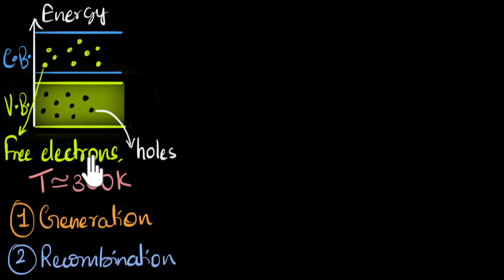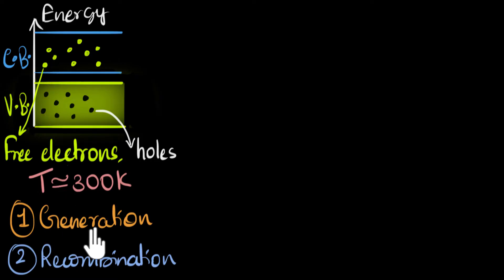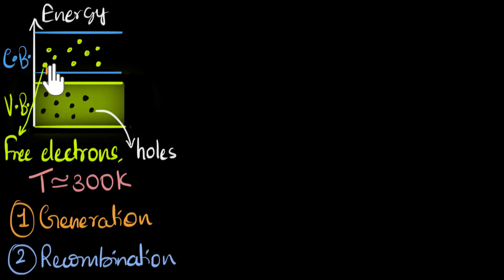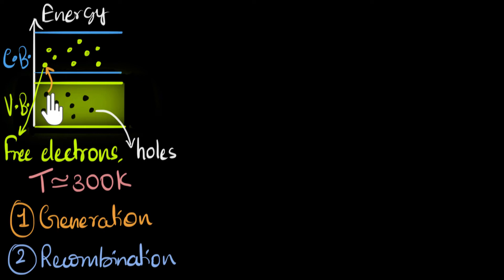Generation is something that we already spoke about. The process where electrons absorb thermal energy and jump to the conduction band and become free — that process itself is called thermal generation. It's called generation because through this process, we have generated a free electron and a hole. We have not created an electron; the electron was already there, but it was not free to move before. But now it is free, so it's sort of created.